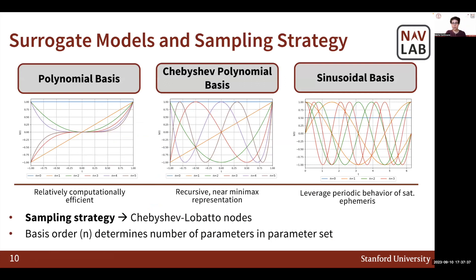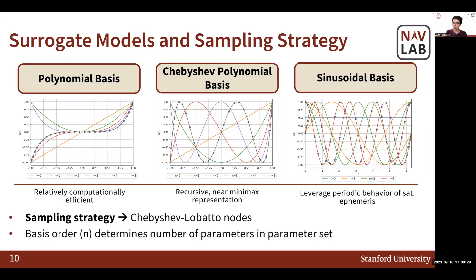We investigate the following surrogate models. First, we consider a straightforward standard polynomial basis model, whose computation of basis functions is relatively efficient. We also consider another type of polynomial basis, the recursive Chebyshev model, which offers a near minimax representation and is often used for parameterization of planetary ephemeris. Finally, due to the periodic nature of satellite ephemeris, we also investigate a sinusoidal basis. The sampling points are Chebyshev-Lobatto nodes, and more information about this specific choice can be found in our paper. The basis order, denoted by n in this work, is the primary driver for the number of parameters contained within a parameter set, which inherently impacts the message length of the broadcast ephemeris.